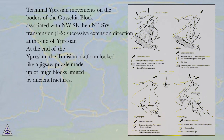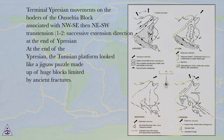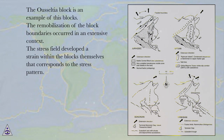Terminal Uprisian movements on the borders of the Usaltia block, associated with NW-SE to SW transtension, showing successive extension directions at the end of Uprisian. At the end of the Uprisian, the Tunisian platform looks like a jigsaw puzzle made up of huge blocks limited by ancient fractures. The Usaltia block is an example of these blocks. The remobilization of the block boundaries occurred in an extensive context, and the stress field developed a strain within the blocks themselves that corresponds to the stress pattern.